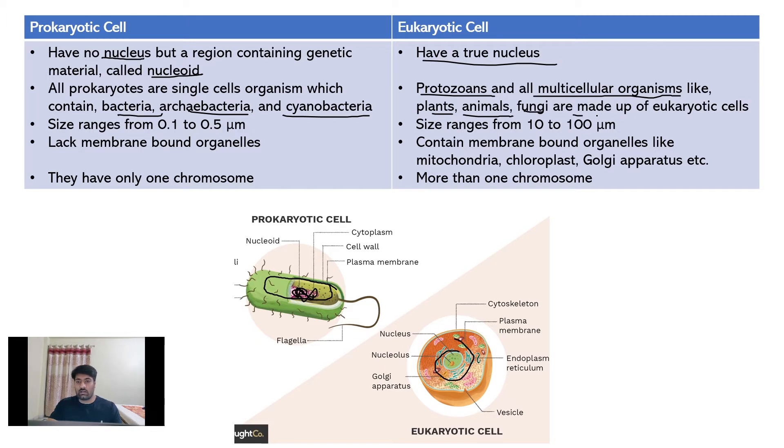The size of prokaryotic cells ranges from 0.1 micrometer to 0.5 micrometer, while the size of eukaryotic cells ranges from 10 to 100 micrometers.